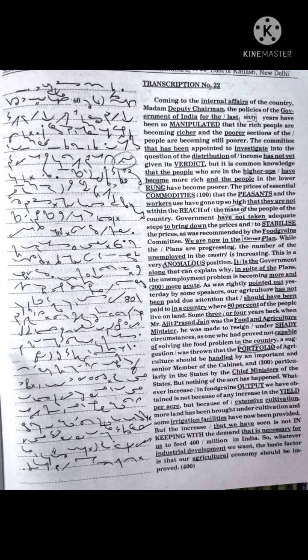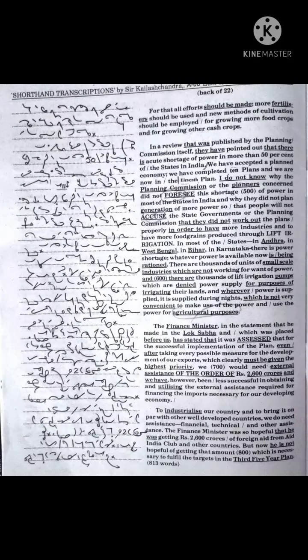In a review that was published by the Planning Commission itself, they have pointed out that there is acute shortage of power in more than 50% of the states in India. We have accepted a planned economy, we have completed 10 plans, and we are now in the 11th plan.